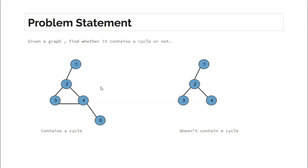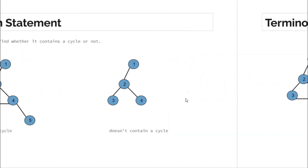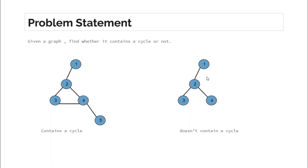A property of a cycle is that it provides alternate ways — alternate paths — to go from one node to another. For example, in this acyclic graph, if you find how many ways there are to reach node three from node one, there is only a single way: one to two and then two to three. For any pair of nodes in this graph, there exists a unique path. But when there exists a cycle, it creates alternate ways.